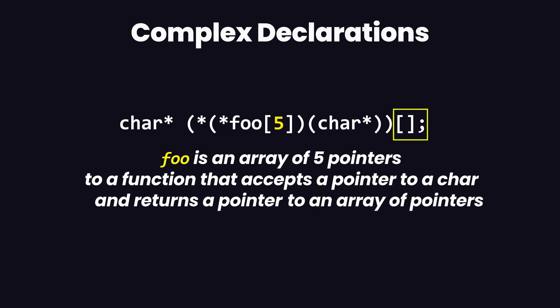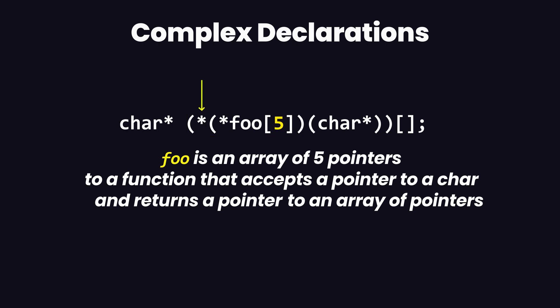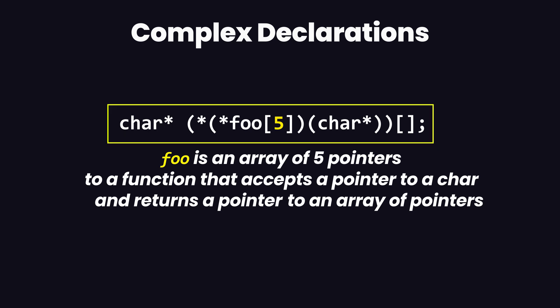Coming from where we left off, we can say that foo is an array of five pointers to a function that accepts a pointer to a character and returns a pointer to an array of pointers. The last thing remaining is the type, which is 'char'. So the full declaration reads: foo is an array of five pointers to a function that accepts a pointer to a character and returns a pointer to an array of pointers to a character. By solving this very complex declaration, you can solve anything that comes up in your code.